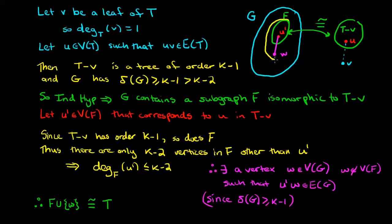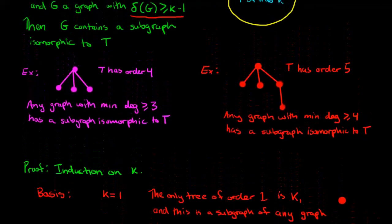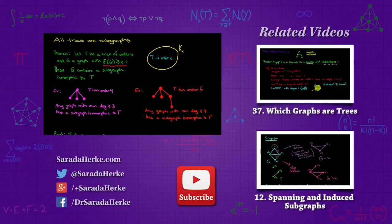Taking graph f and adding vertex w, which u prime is adjacent to, mirrors how in tree t vertex u was adjacent to leaf v. This shows that f union with vertex w is isomorphic to our tree t, meaning t is indeed isomorphic to a subgraph in g, completing the proof. It's important to appreciate what we've proved: any tree of order k is a subgraph of any graph with minimum degree at least k minus one. This means understanding properties of trees is very important to understanding graphs in general, because trees appear as subgraphs of many, many graphs. Thanks for watching — I'll see you next time.